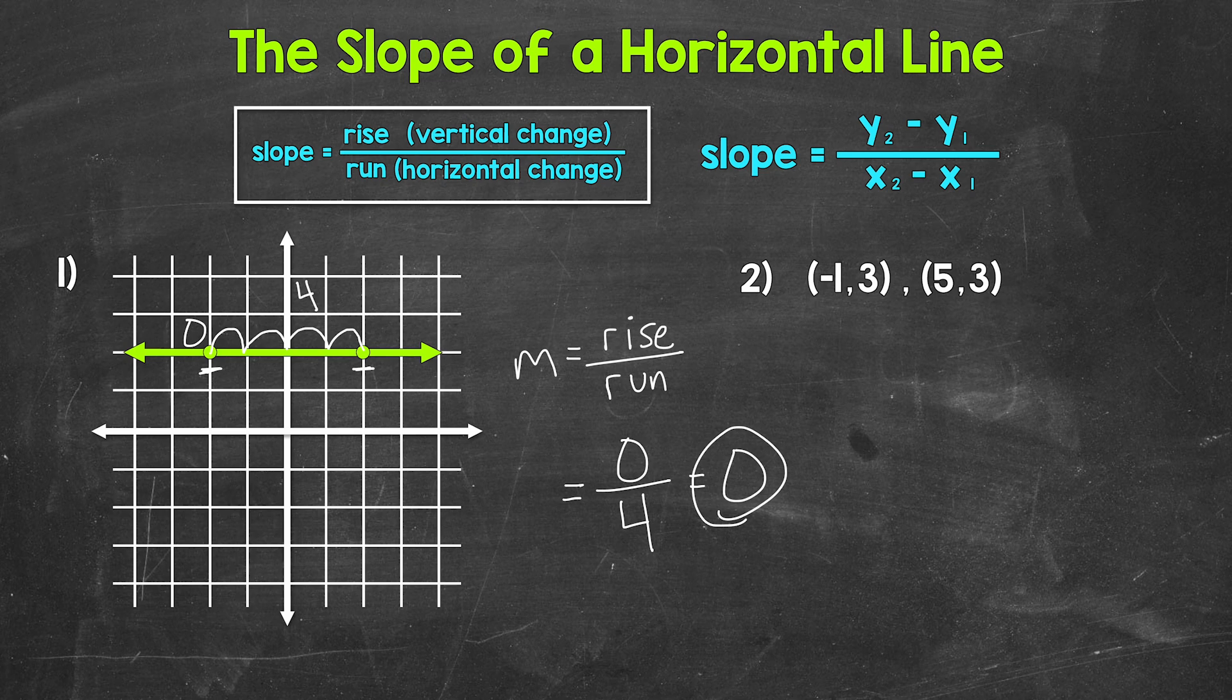The y values stay the same as we move across the line, and the x values increase. For this line in particular, the y value of any point is going to be two. So again, any horizontal line has a slope of zero.